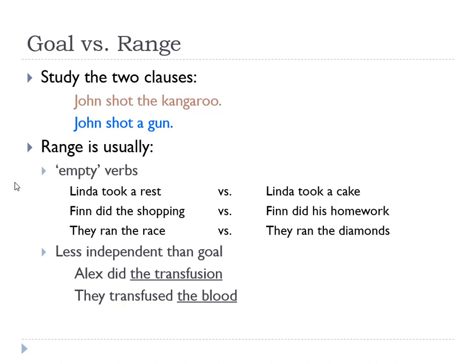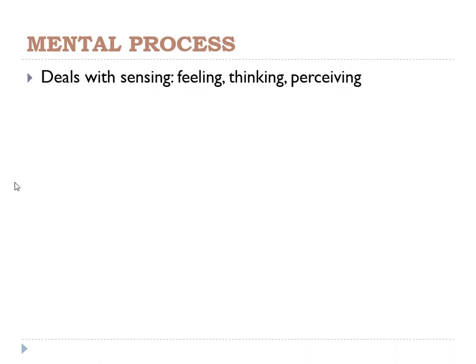Moving on, mental process is the process that deals with our five senses, our feelings, our thinking, and our perceiving. When we talk about feelings, we talk about hating somebody, liking somebody, wanting, desiring — those are the sensings that deal with feeling.